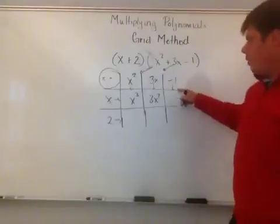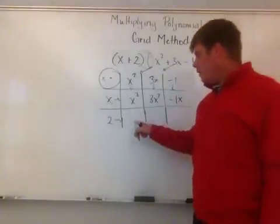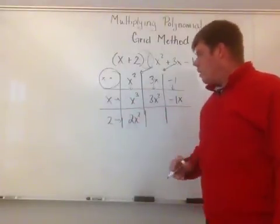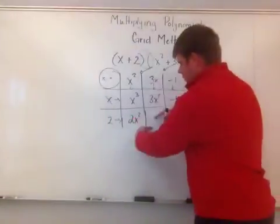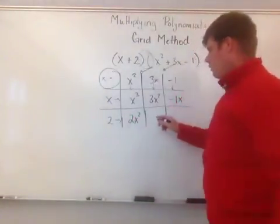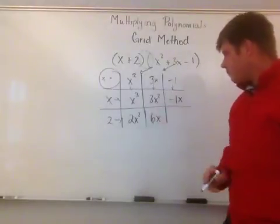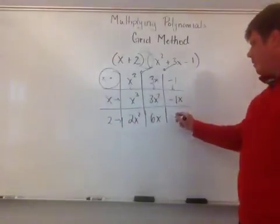And in this box here, I have x squared meeting 2, which is 2x squared. I have 3x meeting the 2 down here, because this goes down, so this goes across. So at this box right here, that's where 2 and 3x intersect, which gives me a 6x. And in the last box here, I have negative 1 and 2, where they're going to meet, which makes a negative 2.